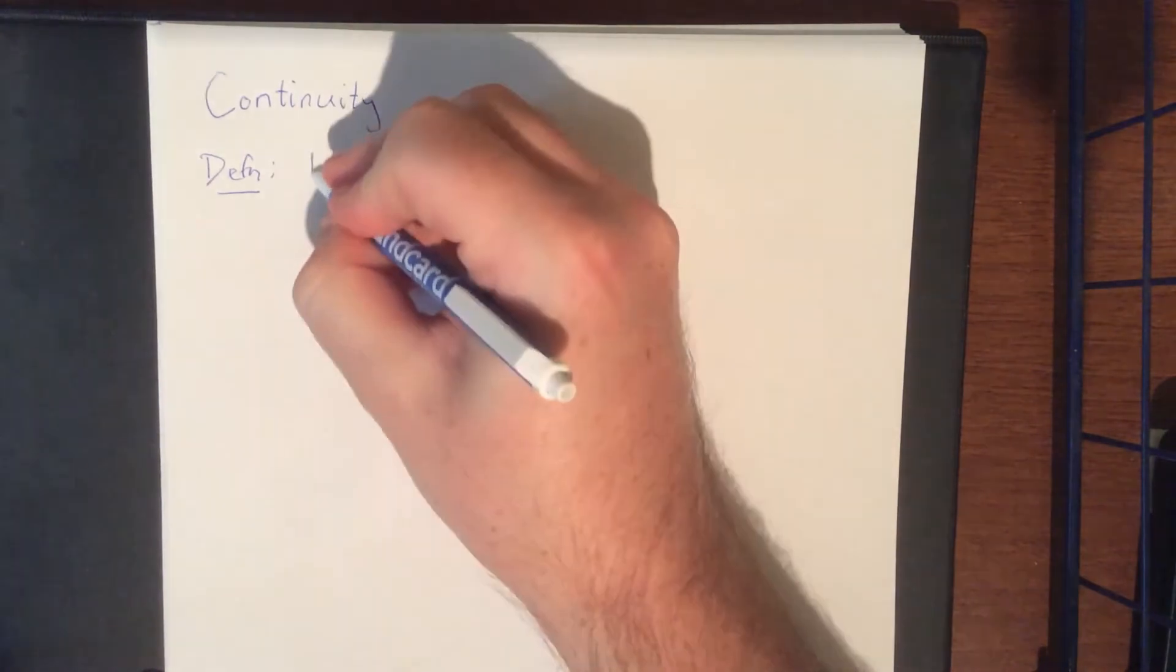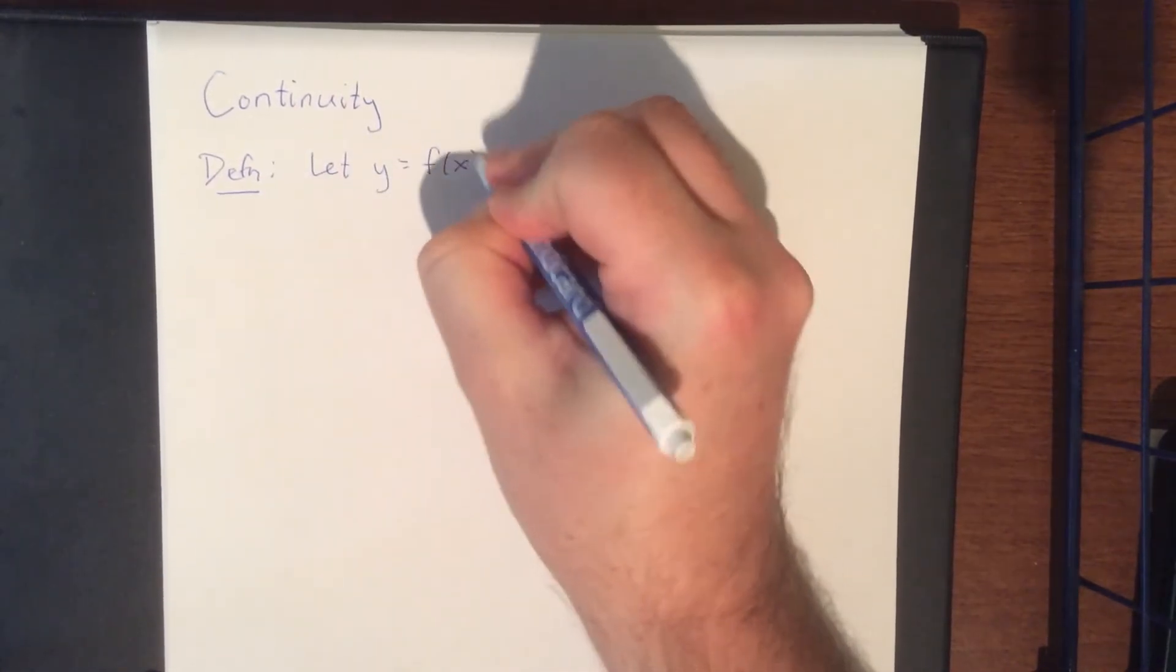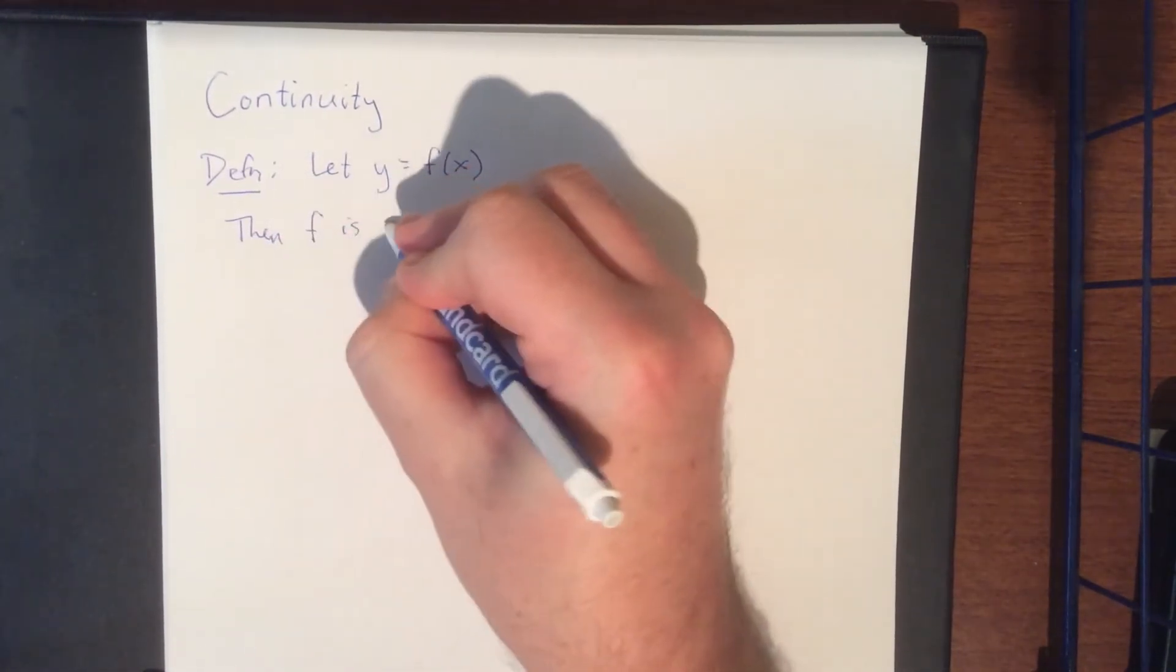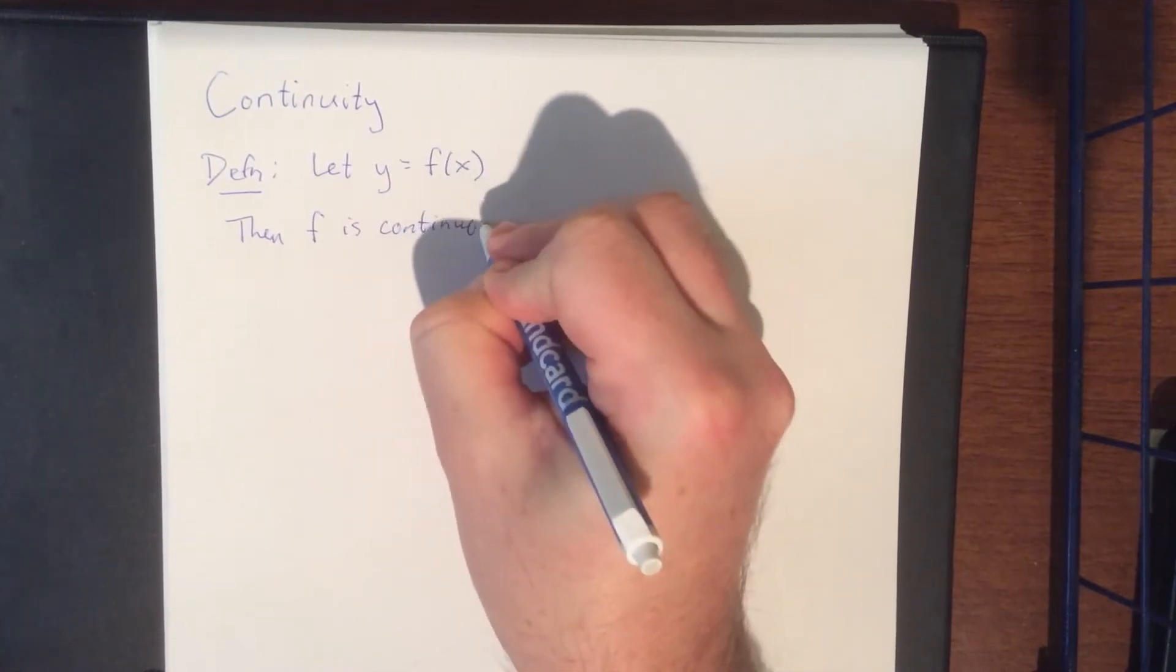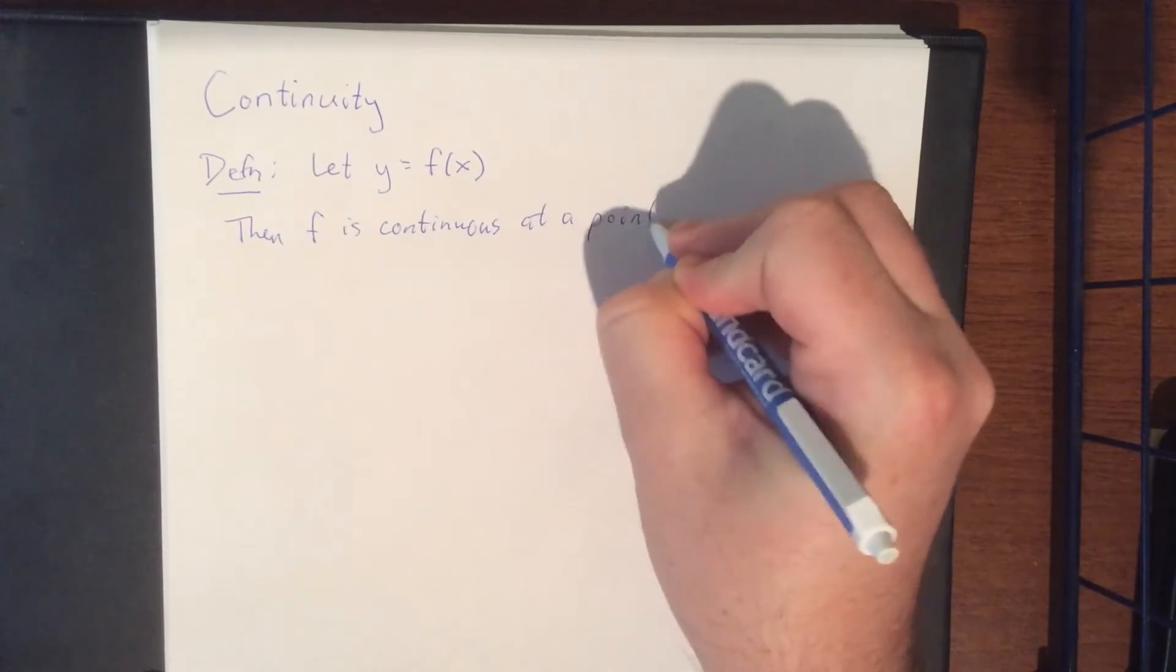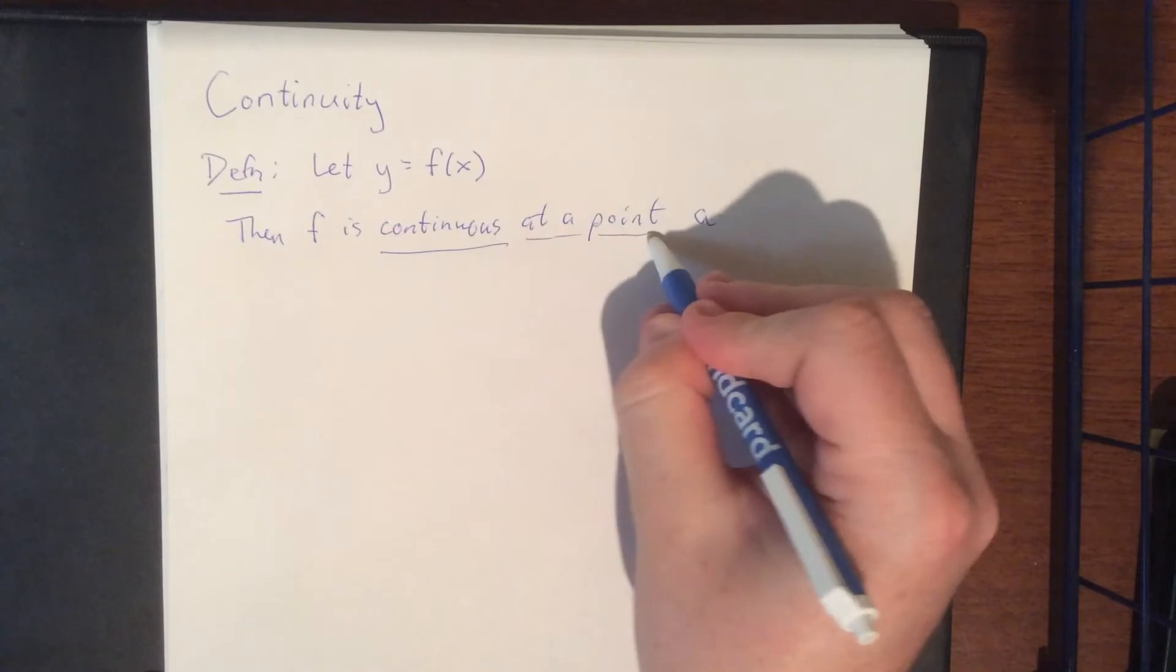Suppose that you have a function, say let y be equal to f of x, and we say f is continuous at a point, and we'll refer to that point as a, continuous at the point a.